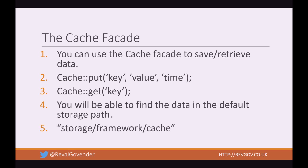So the cache facade. You can use the cache facade to save or retrieve data. You can use cache put or cache get. For cache put — which means you're storing data — it requires three parameters: key, which is the key used for your cache data; value, which is the data you want to cache; and time, which is the time in minutes you want that data to be stored. For cache get, all you require is just the key to pull that data. You will be able to find the data in the default storage path — as of 5.3, it's storage/framework/cache. There are a whole bunch of other things the facade does, so refer to the Laravel docs — it's quite detailed and very useful.